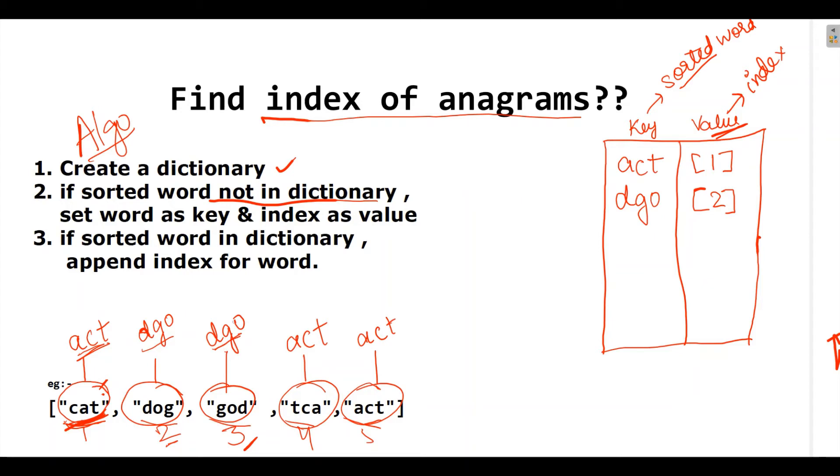Now, here we have this DGO in our dictionary and I want this third index to be appended here. So, what I will do? I will get it from the dictionary and append its index.